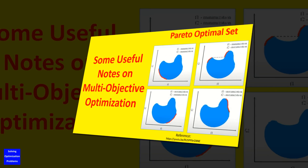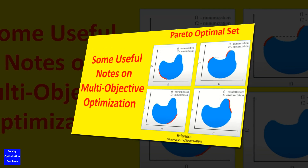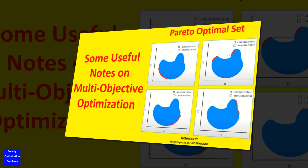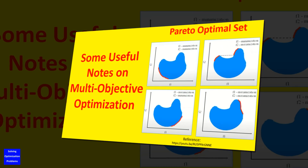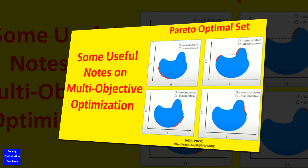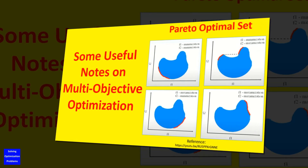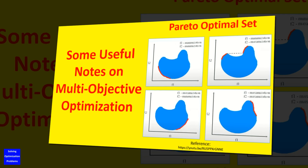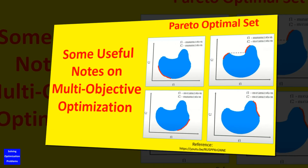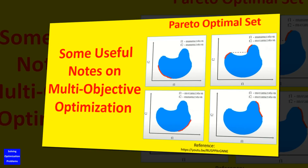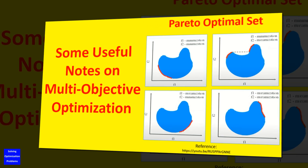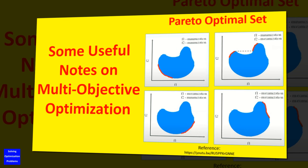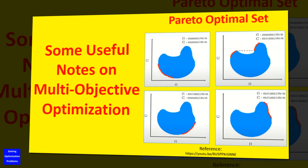Hello everyone. I'm going to show you some useful notes on multi-objective optimization. Multi-objective optimization is much more difficult than single-objective optimization, and it has a lot of useful applications in many fields. Did you know that multi-objective evolutionary optimization algorithms are very hot research topics today? Several videos showing my MATLAB and Python codes of multi-objective genetic algorithms will be uploaded soon.